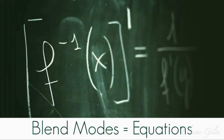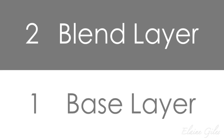Blend modes take input values, do something with them, and give you an output value. The precise output depends on the input value and the blend mode — that's as difficult as it gets. To recap in practical terms: you need at least two layers. I'll refer to them as the base layer — the lower of the two — and the blend layer, which is the layer that has the blend mode applied to it, where it normally says 'normal.' You can use more than two layers, but two is the minimum.